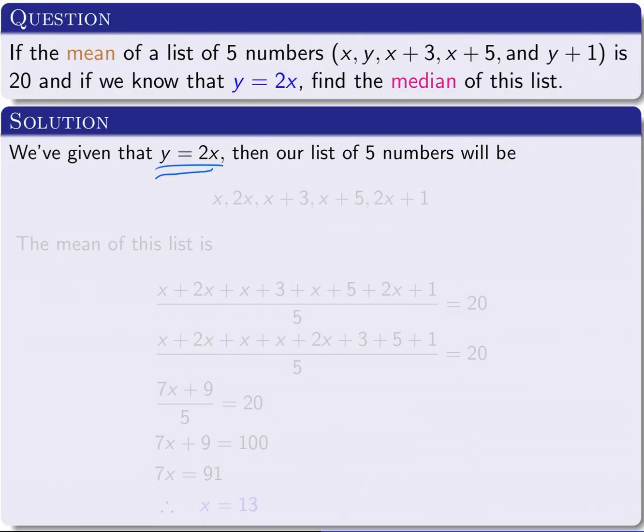We just need to substitute y=2x into each of the numbers in these five numbers. So we have x, which stays as x, and instead of y it will be 2x, then x+3, x+5, and the last number instead of y+1 will become 2x+1.